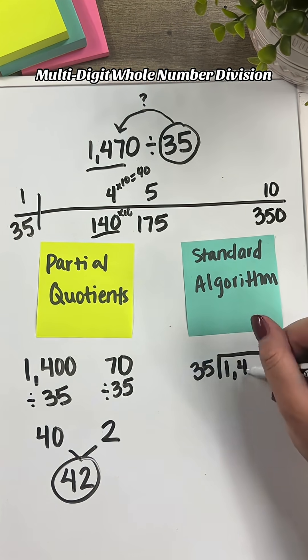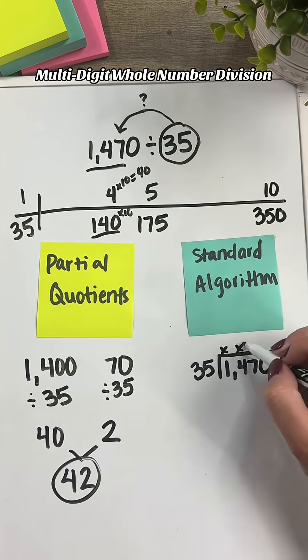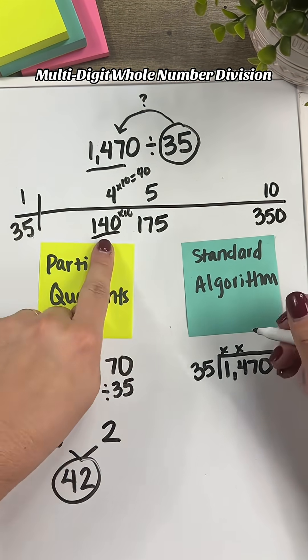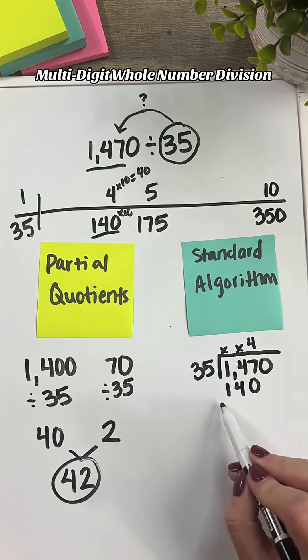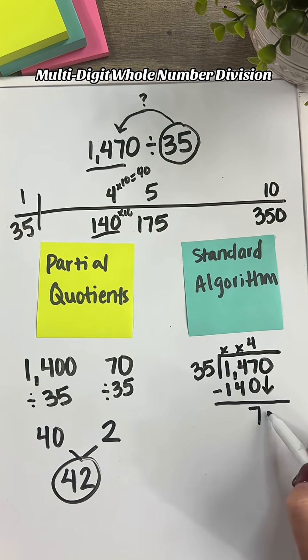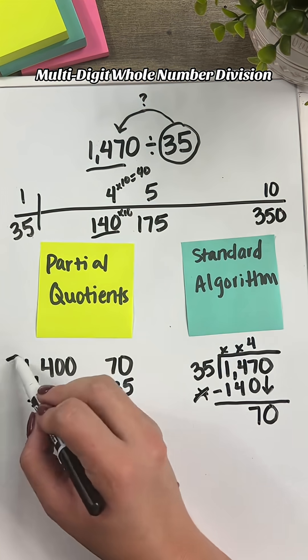We can relate what we just did to the standard algorithm. How many 35s will go into 140? According to my table, we have 4 because 4 times 35 is 140. Bring down that 70.